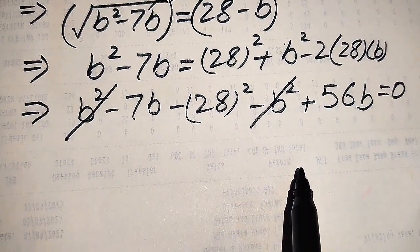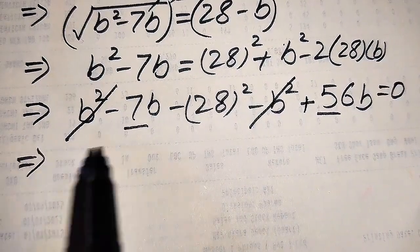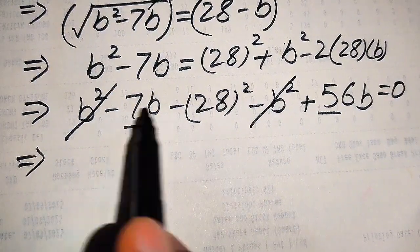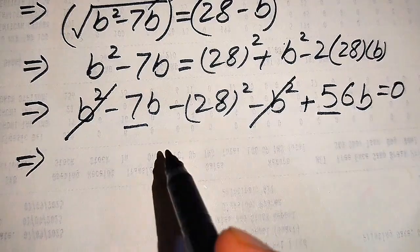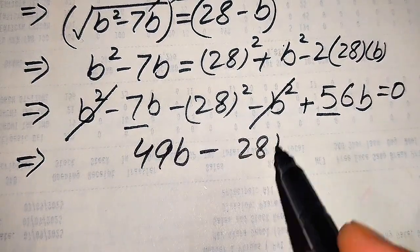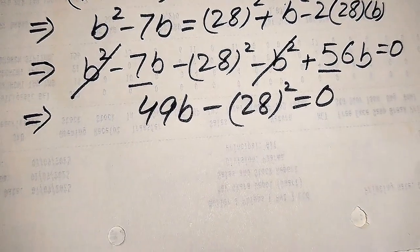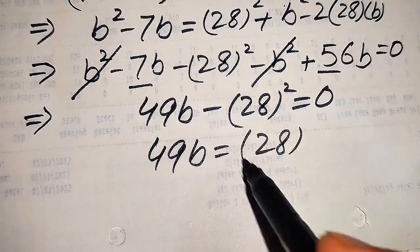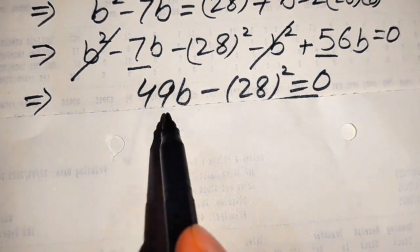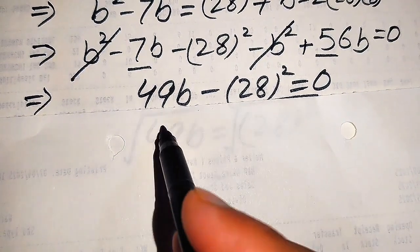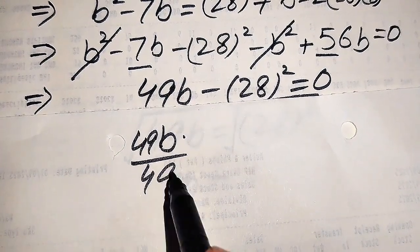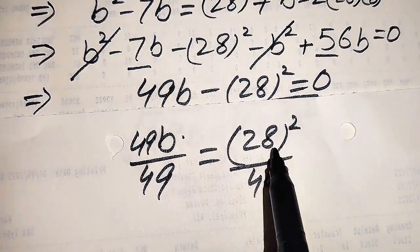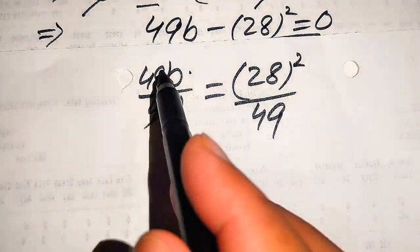The b² and −b² cancel each other out. We add and subtract the like terms: −7b + 56b = 49b, giving us 49b − 28² = 0. We move −28² to the right hand side: 49b = 28². Then we divide both sides by 49, so 49b/49 = 28²/49, and we get b = 28²/49.